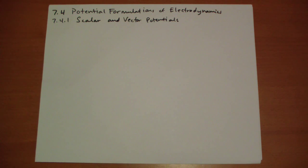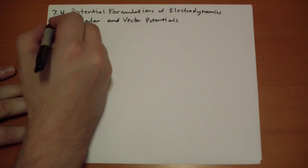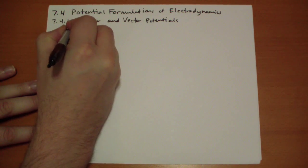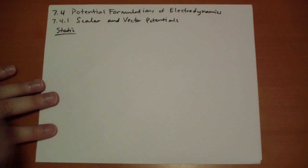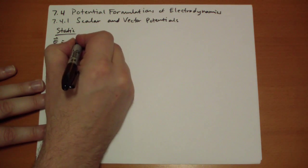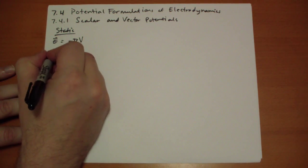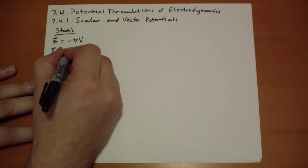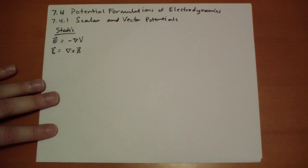This is where we cover the potential fields, V and A, and how they work with electrodynamics. So in the static case, we had the two simple rules that E vector was the gradient of V, and the B vector was the curl of A vector.